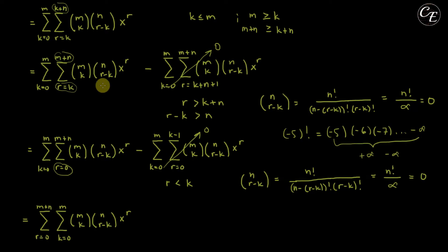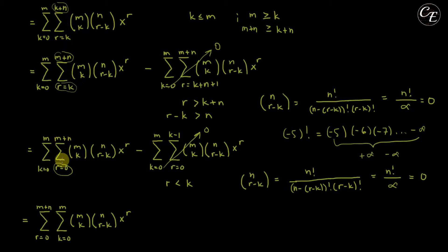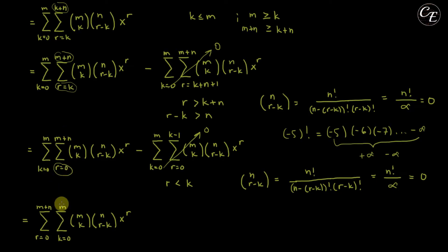Observe that after these changes, the inner summation no longer depends on k from the outer summation. So it is valid to interchange the two summations. We get r running from 0 to m plus n on the outside, and k running on the inside, with the remaining terms unchanged.